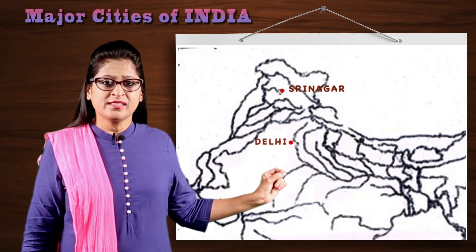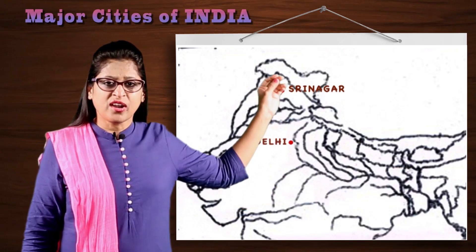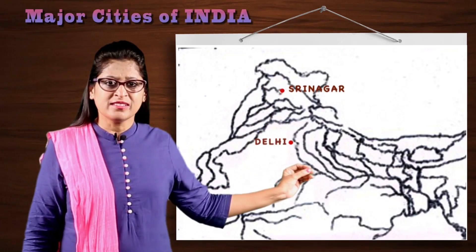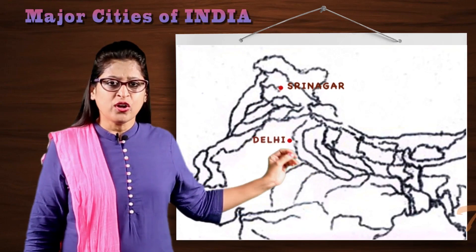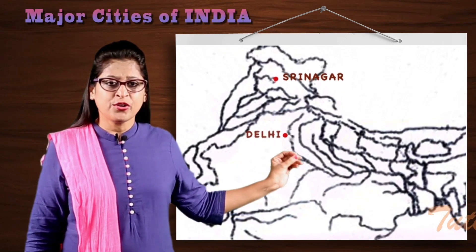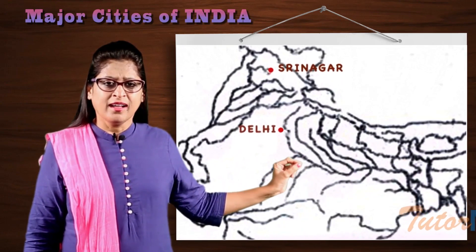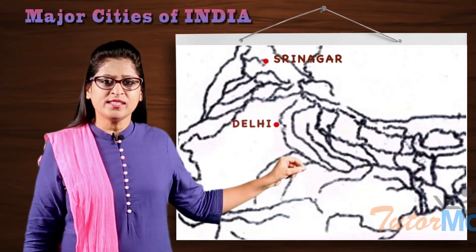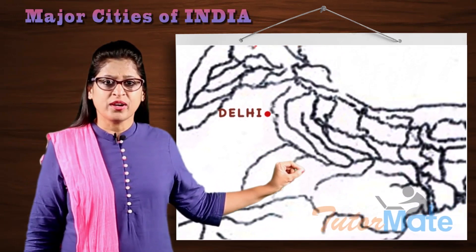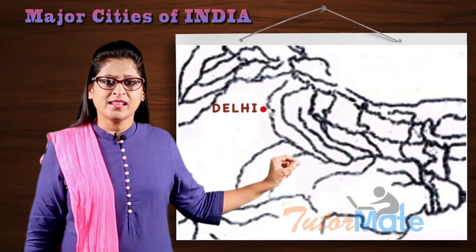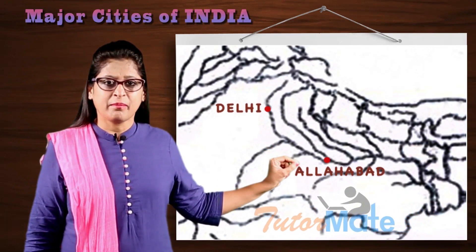Now students, just run your fingers through your Ganga and your Yamuna. The confluence of the Ganga and the Yamuna is Allahabad.